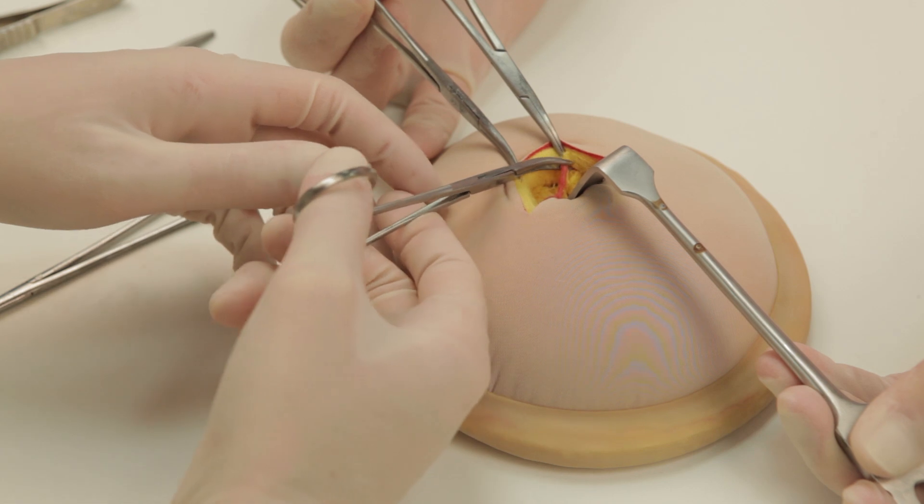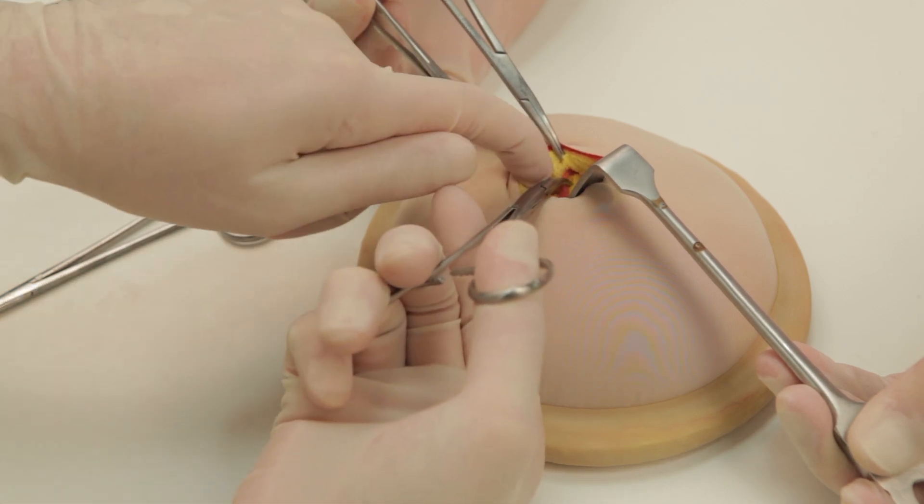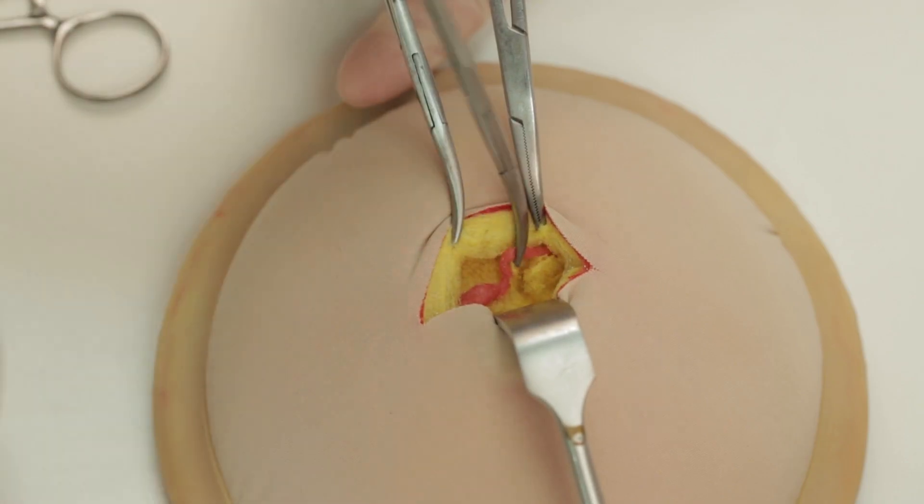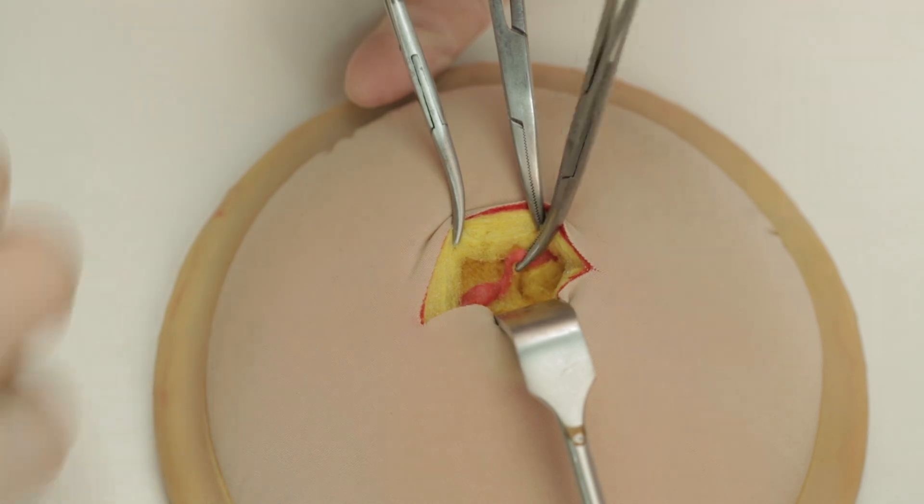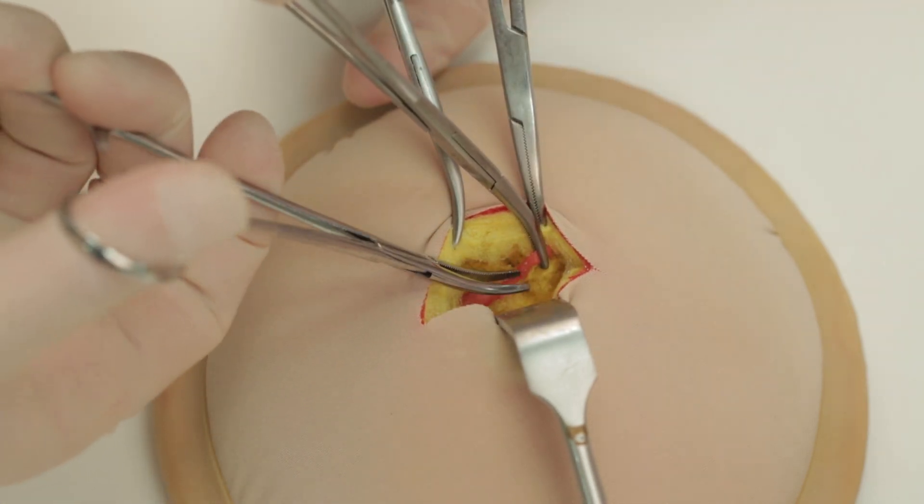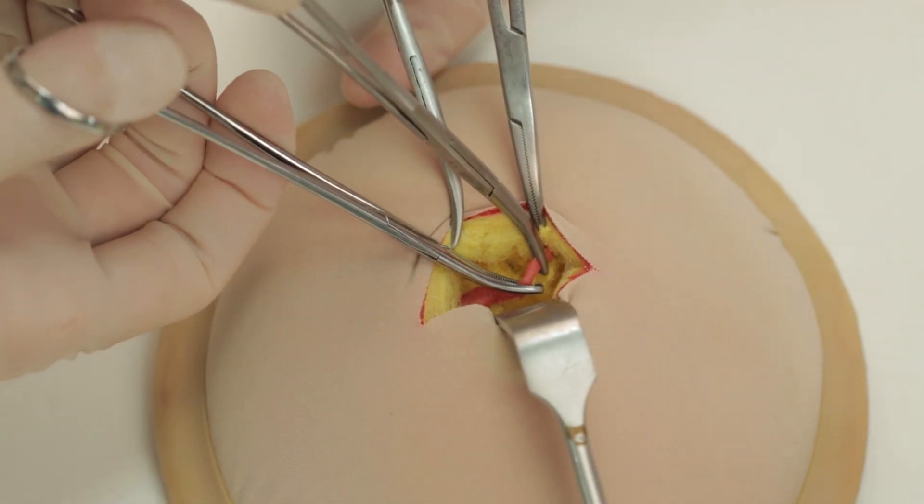Blood vessels should be ligated, either in continuity or between clips. Remember to spread the scissors along the line of the blood vessels to avoid tearing them.